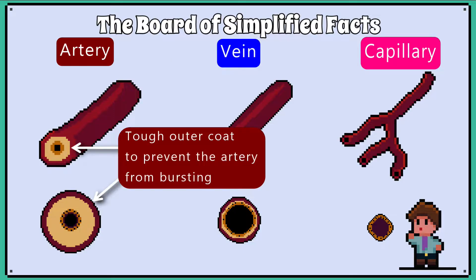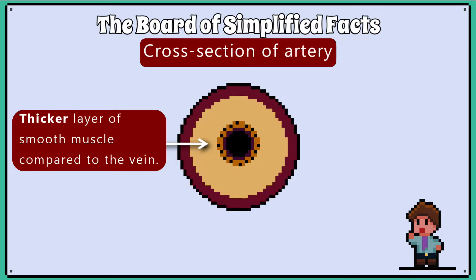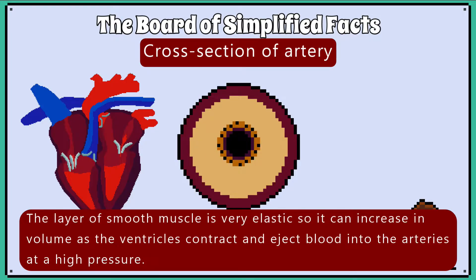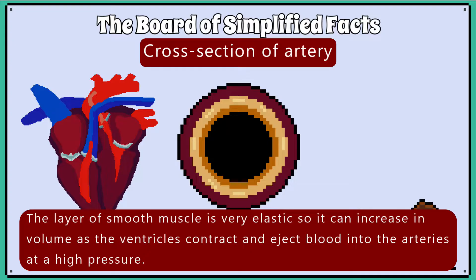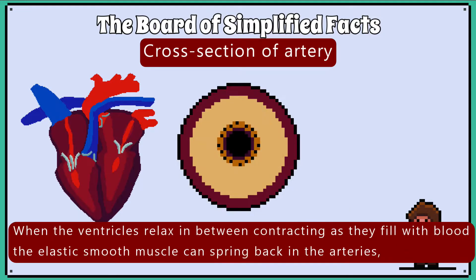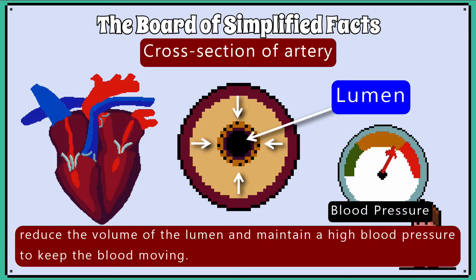Arteries have a tough outer coat and thicker wall compared to veins and capillaries, and they generally contain the thickest layer of smooth muscle. The layer of smooth muscle is very elastic so it can increase in volume as the ventricles contract and eject blood into the arteries at high pressure. When the ventricles relax in between contracting as they fill with blood, the elastic smooth muscle can spring back in the arteries, reduce the volume of the lumen, and maintain a high blood pressure to keep the blood moving.